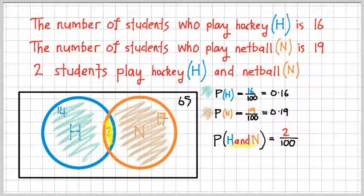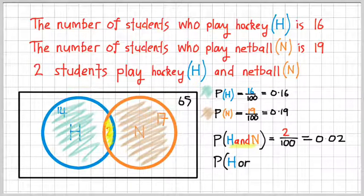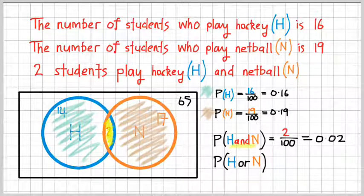The last probability I want to calculate, before I do that, let me just put the decimal down, 0.02, is this one here. So this probability now, I want to know what is the chance or what is the probability that a student plays hockey or netball, but not both. So just hockey and just netball.